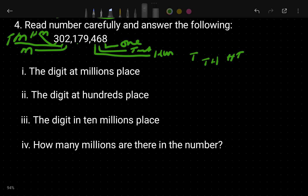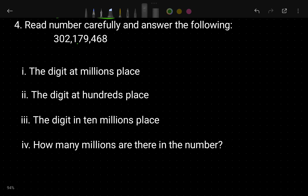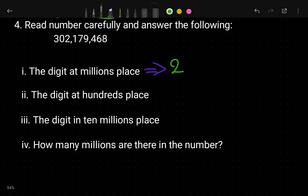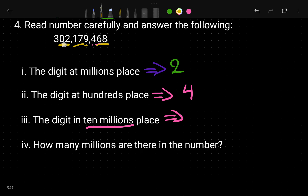Let's answer the sub-questions. The digit at the million place: counting ones, tens, hundreds, thousands, ten thousands, hundred thousands — the digit at the million place is 2. The digit at the hundreds place: counting from the right, the digit in the hundreds place is 4. The digit at the ten million place: counting up — it is 0.